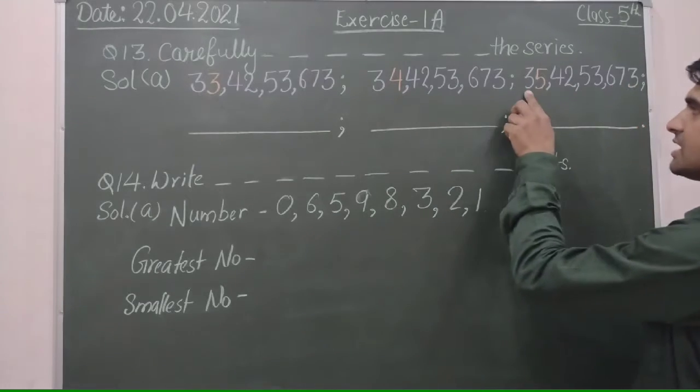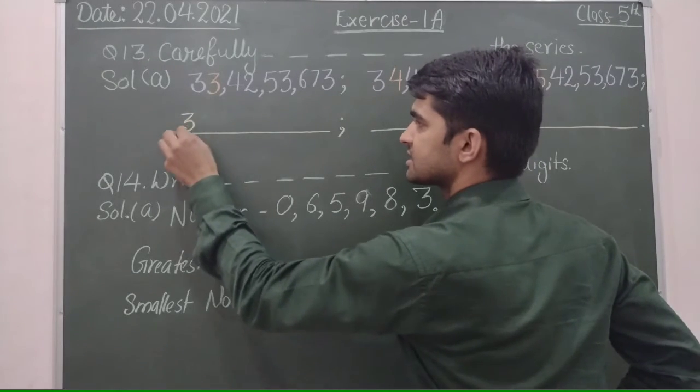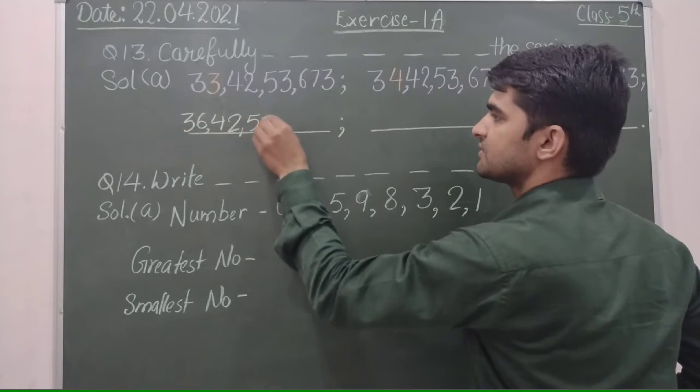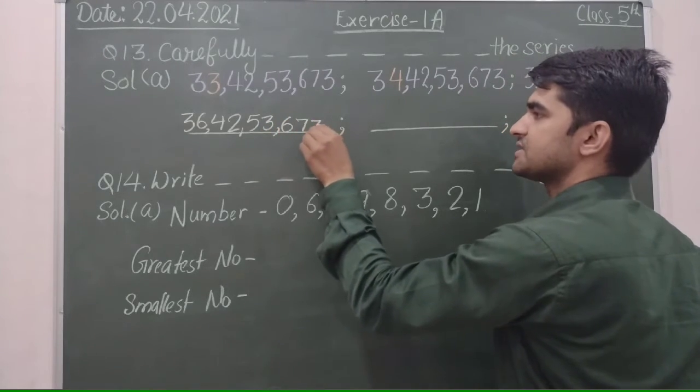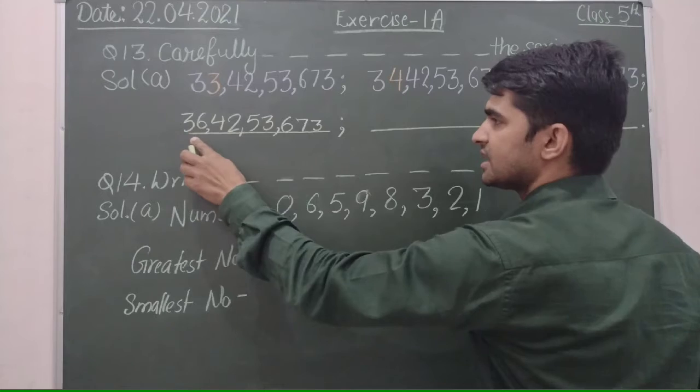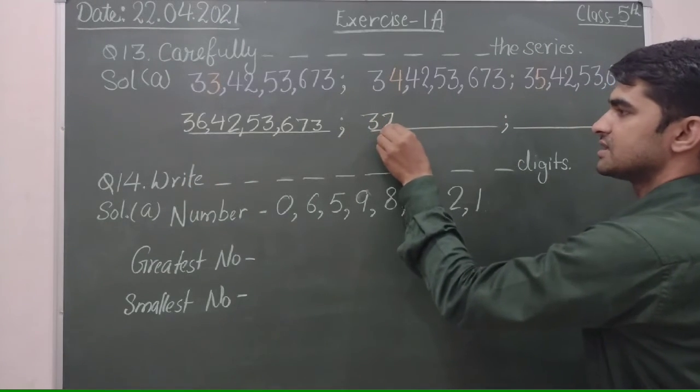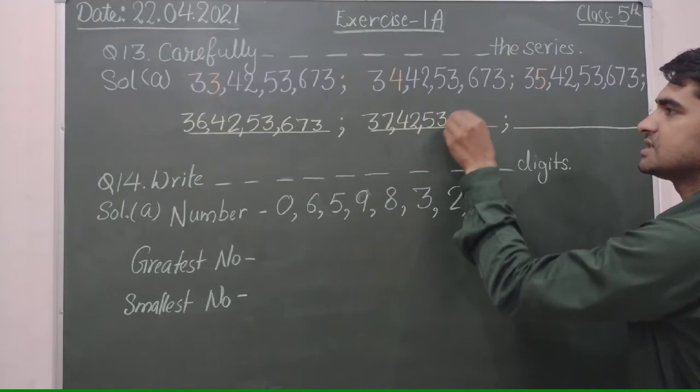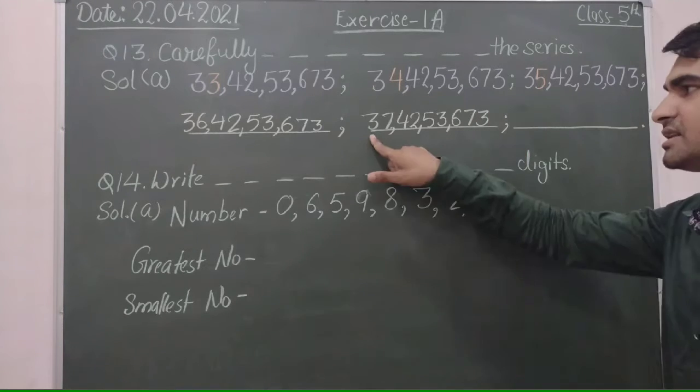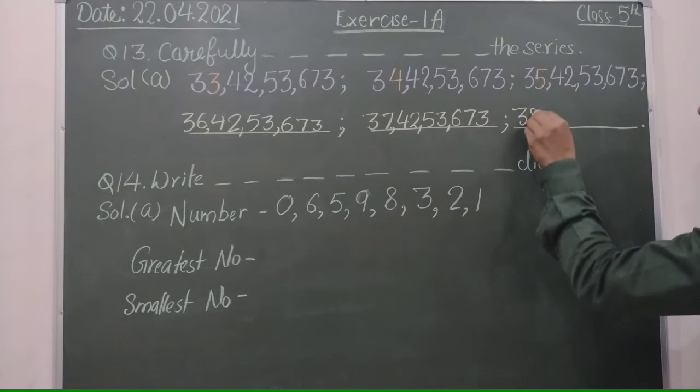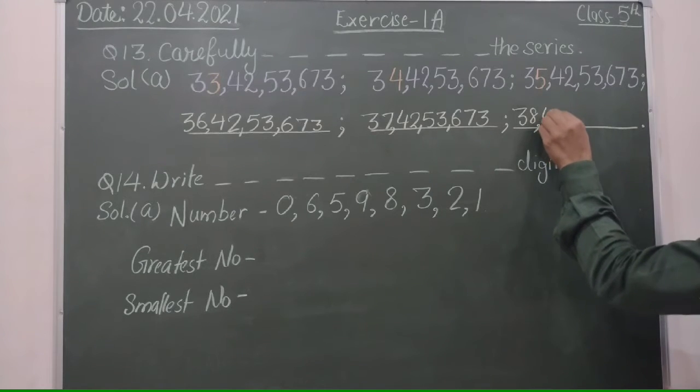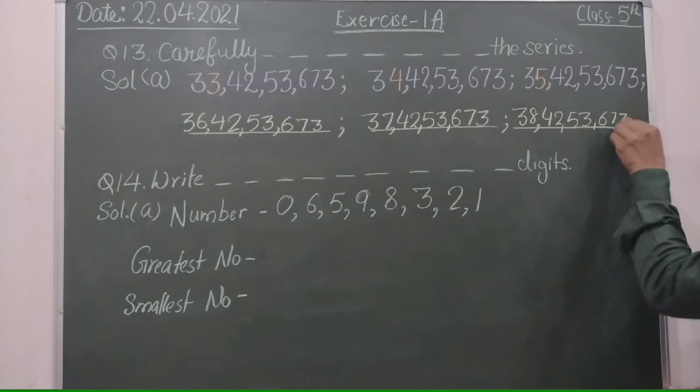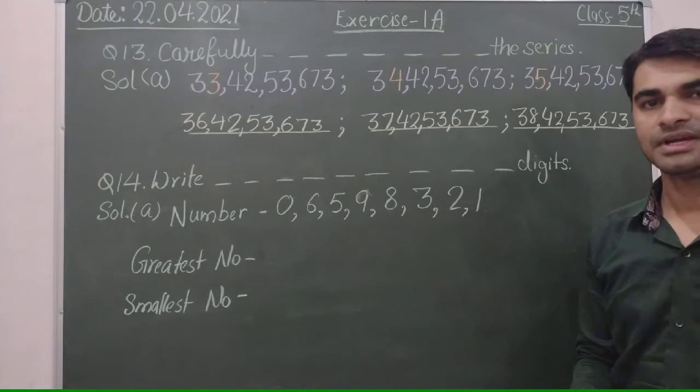And next, 36 crore 42 lakh 53 thousand 673. Now after 36, 37 - 37 crore 42 lakh 53 thousand 673. Then 38 - 38 crore 42 lakh 53 thousand 673. In this way you will do question number 13.